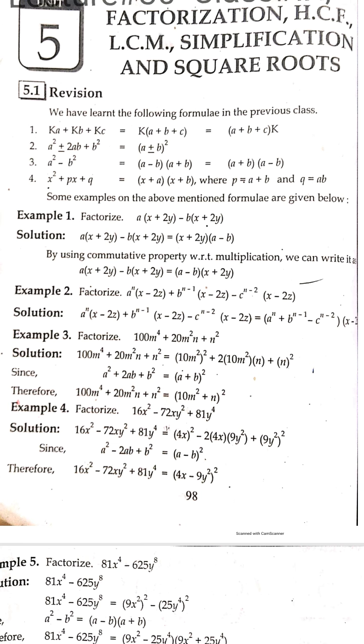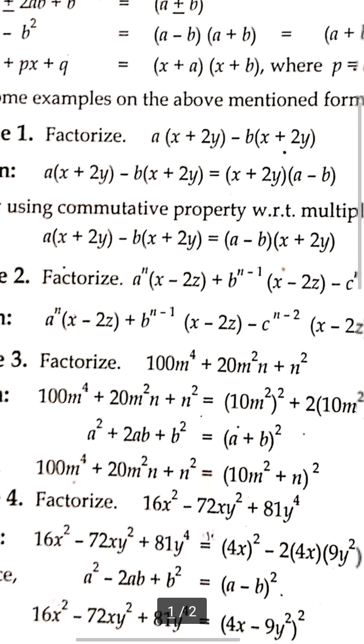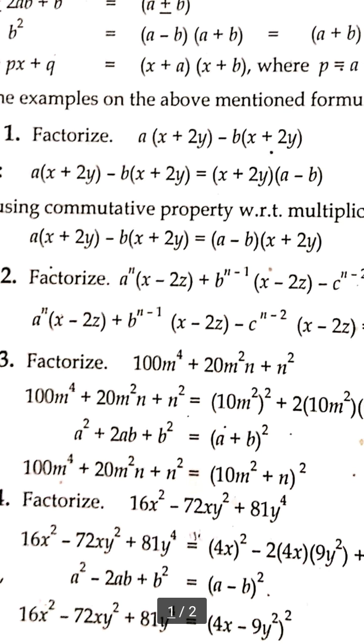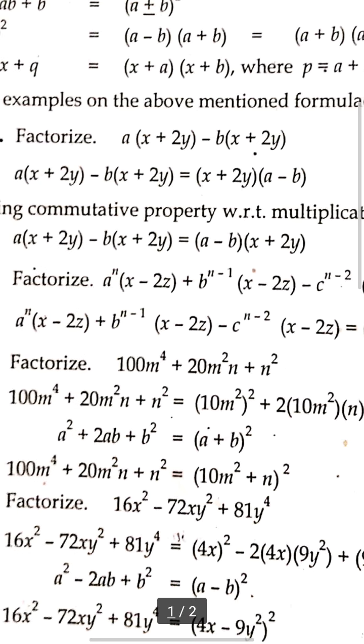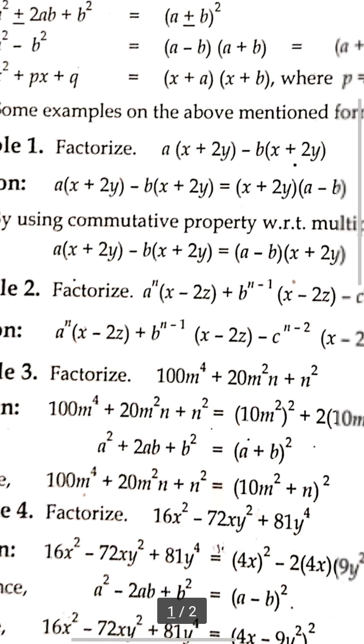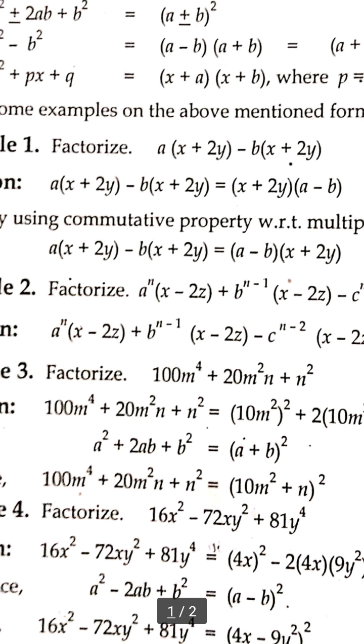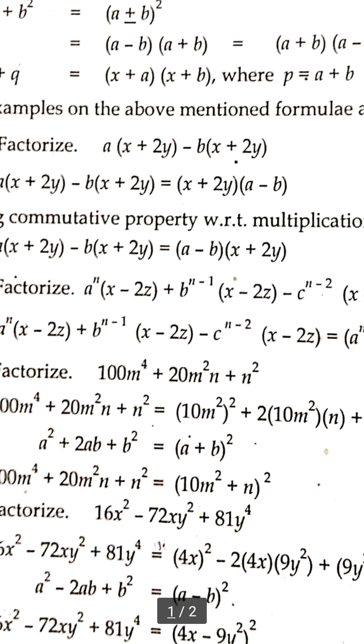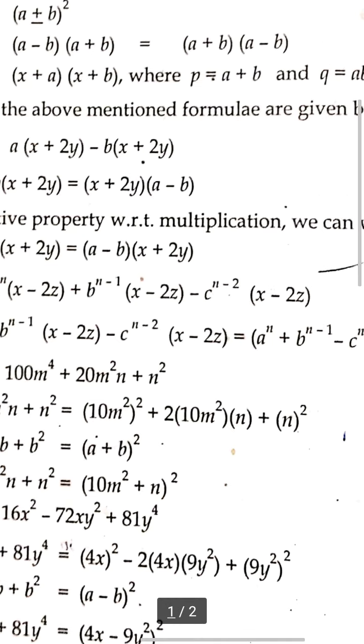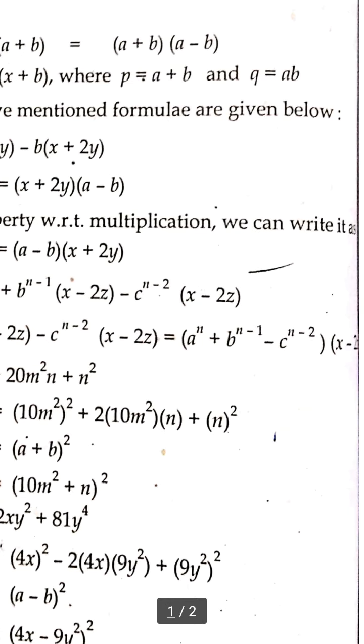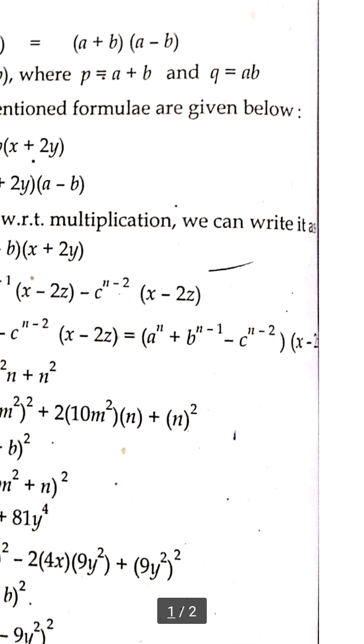Example 2: Factorize A^n(X - 2Z) + B^(n-1)(X - 2Z) - C^(n-2)(X - 2Z). The solution is A^n + B^(n-1) - C^(n-2) times (X - 2Z).